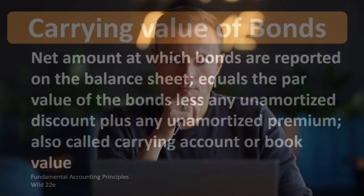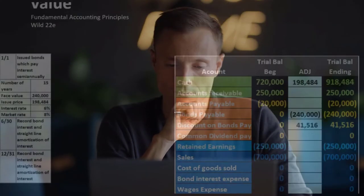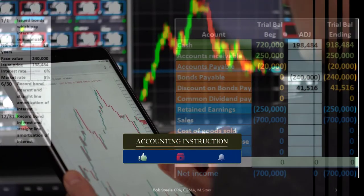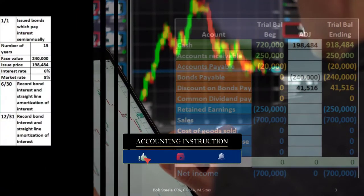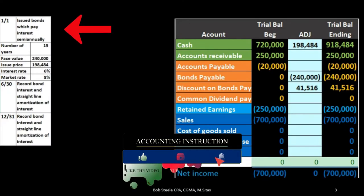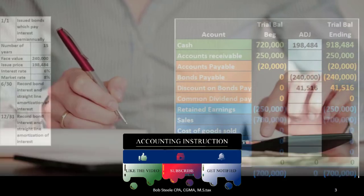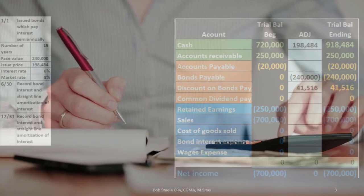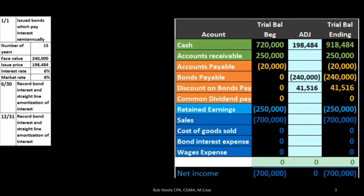When thinking about bonds, we could be thinking about the issuer of the bonds or the purchaser of the bonds. We often think of purchasing bonds as a form of investment; however, in this example we're going to think about it from the perspective of issuing the bond. So if we are a corporation, we can issue the bond as a form of cash flow generation, similar to a note — us receiving money for the bond.